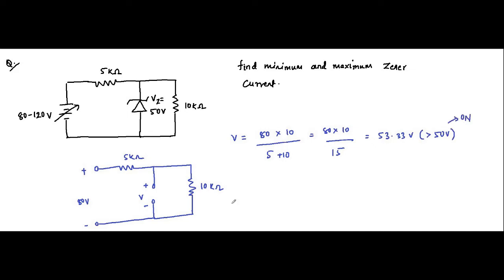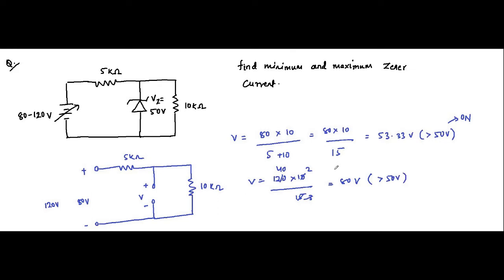So in this case the Zener diode is ON. Obviously, for the 120 volt case it will also be ON. For 120 volt, the voltage would be 120 into 10 by 15, which equals 80 volt. Since 80 volt is also greater than 50 volt, the diode is ON in both cases.